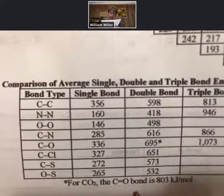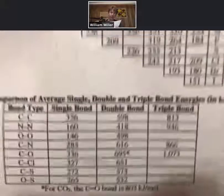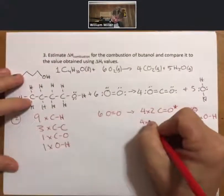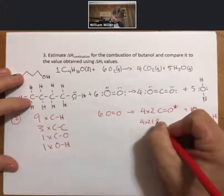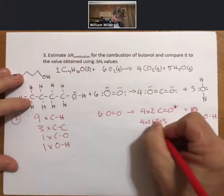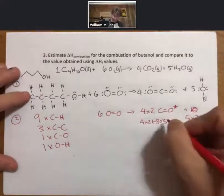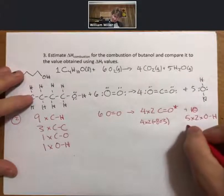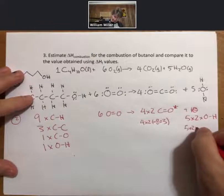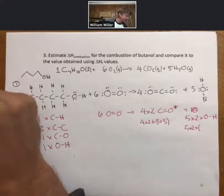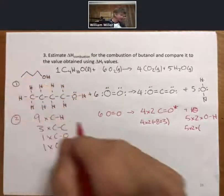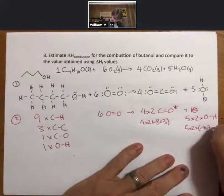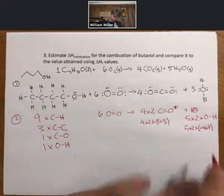So for CO2, the C double bond O bond is 803 kilojoules per mole. So this is going to be four times two times 803 minus. And this is going to be five times two times oxygen-hydrogen is 467.